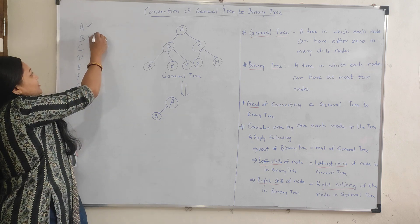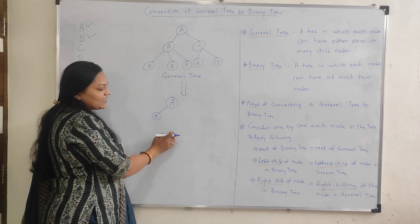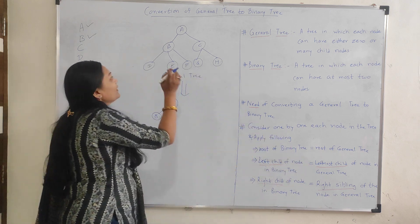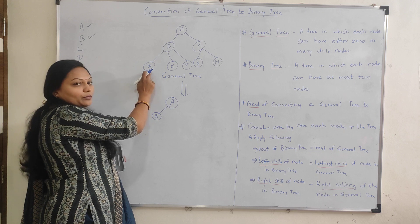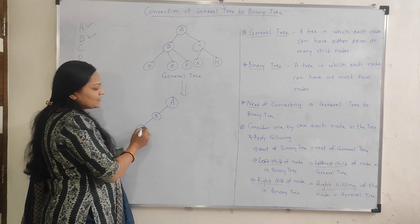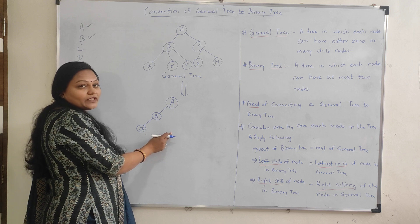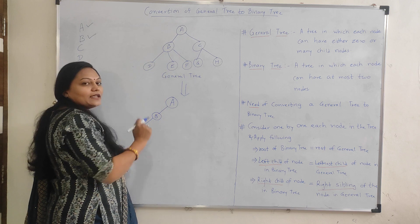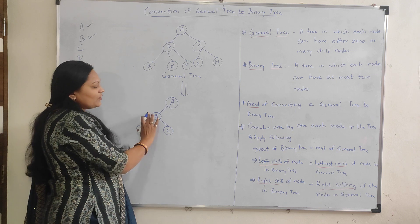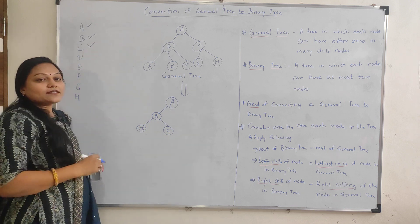Now consider node B. The left child of B is the leftmost element, which is D in the general tree. So D becomes the left child of B in the binary tree. The right child of B is found using B's right sibling, which is C. So C becomes the right child of B in the binary tree.